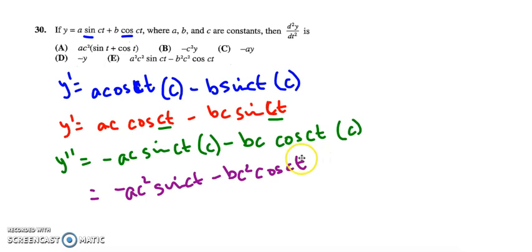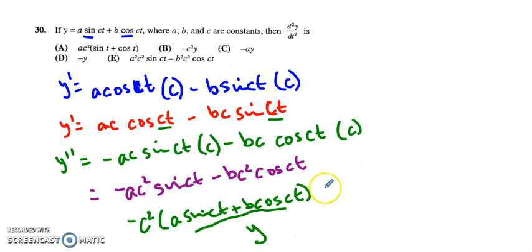I'm at this point where I feel like I ought to be able to figure out if I match. I know I could factor out a negative c squared. If I take out negative c squared, I'll be left with a sine of ct plus b cosine of ct. And now I'm noticing that this here was my original problem, it is y. So my final answer is negative c squared y, and choice B works.